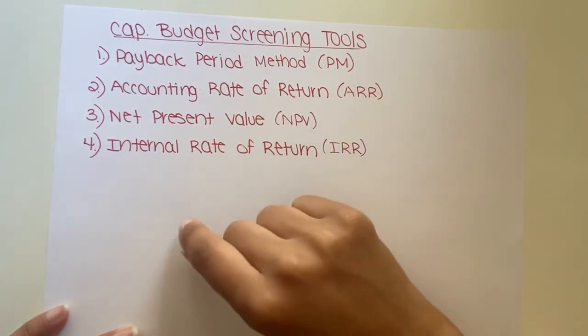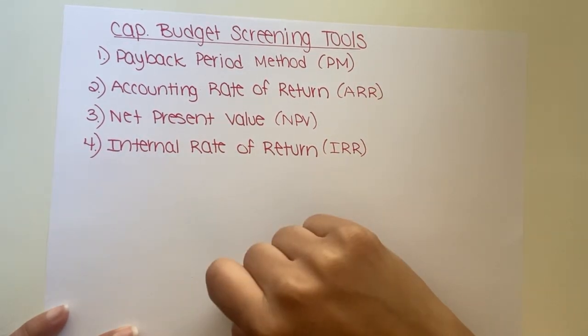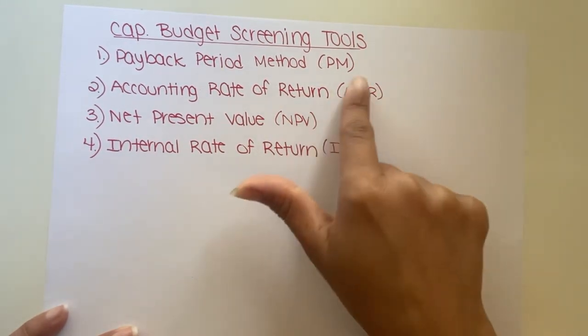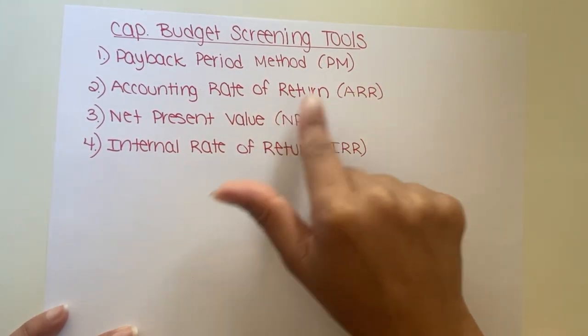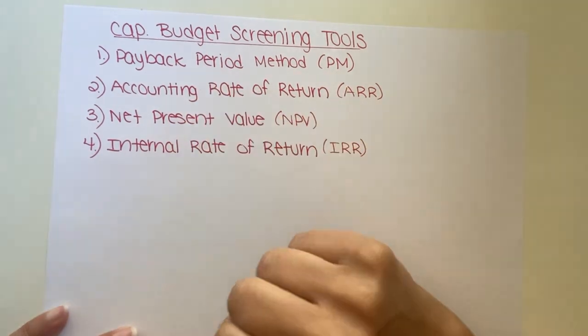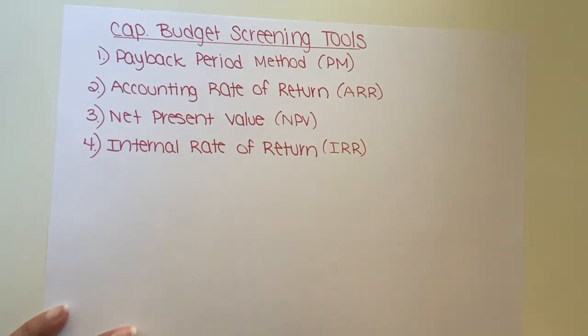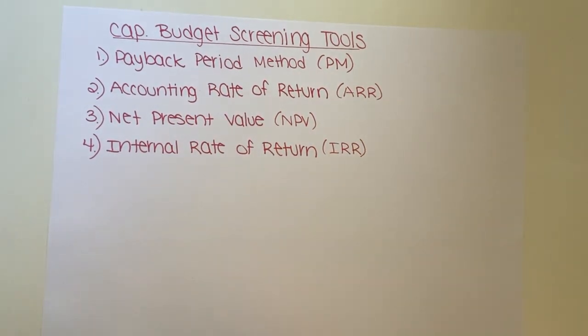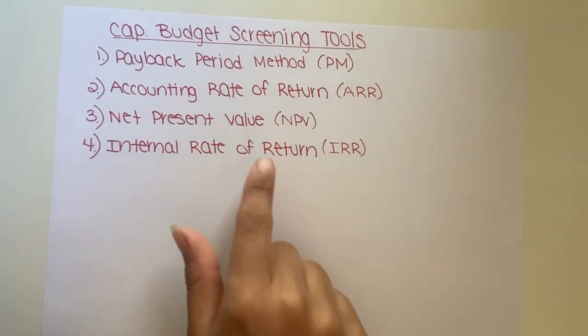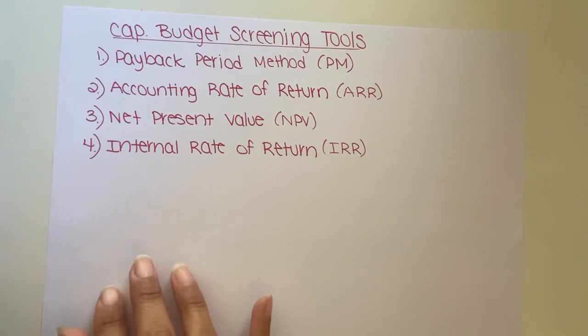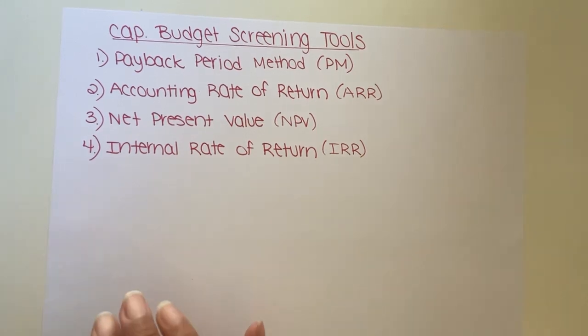That way, if I shorthand it at any point, you can go back here and see what the abbreviation means — for example, PM stands for the payback period method. So I have those written out for you there.